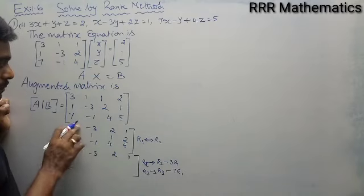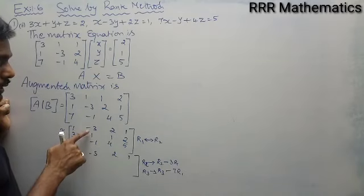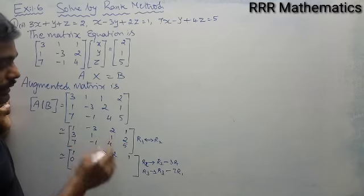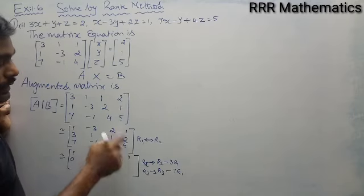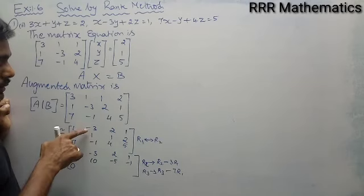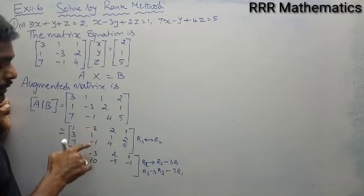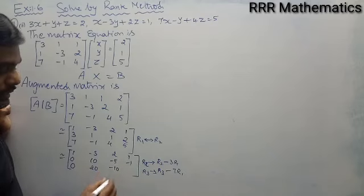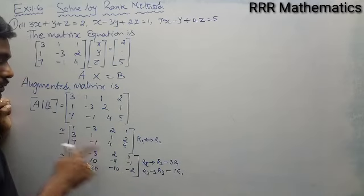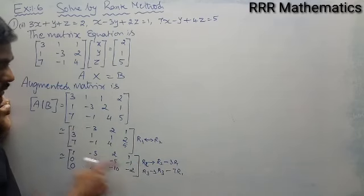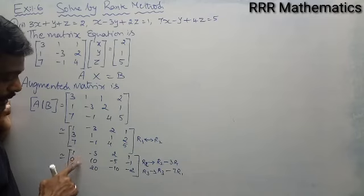Carrying out the calculations: for R2 - 3×R1: 3-3=0; 1-(-3×(-3))=1+9... wait, 1-3×(-3)=1+9=10; 1-3×2=1-6=-5; 2-3×1=-1. So new R2 = [0, 10, -5 | -1]. For R3 - 7×R1: 7-7=0; -1-7×(-3)=-1+21=20; 4-7×2=4-14=-10; 5-7×1=-2. So new R3 = [0, 20, -10 | -2]. I now have zeros in the first column. Next, I need a zero in the (3,2) position.